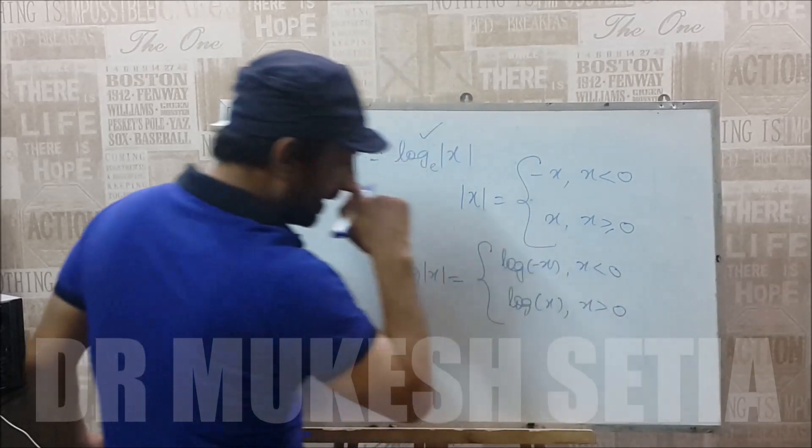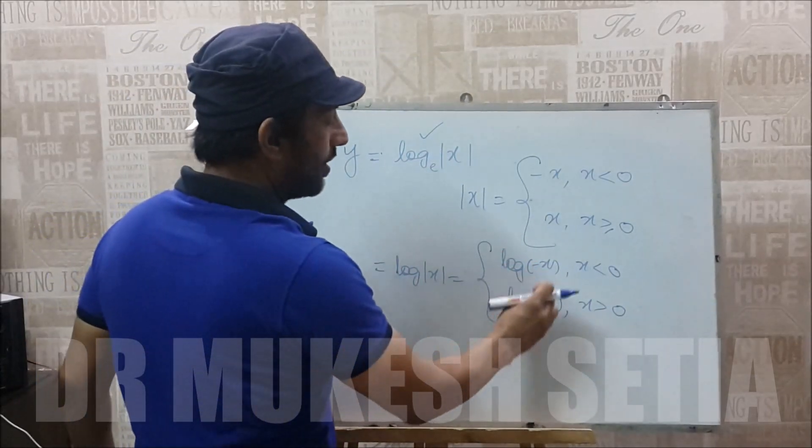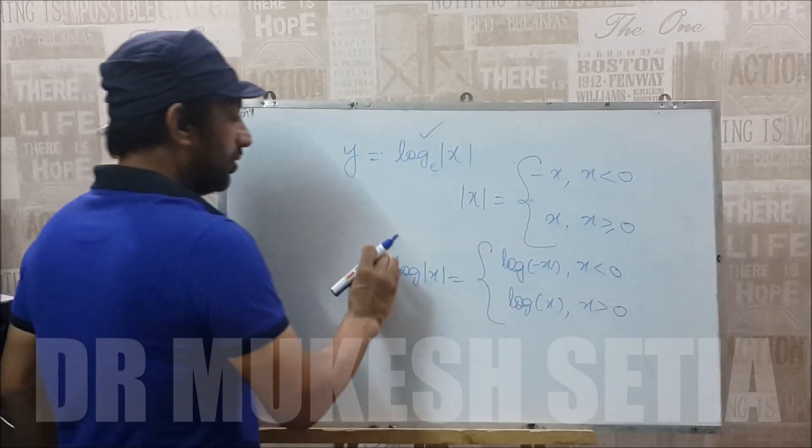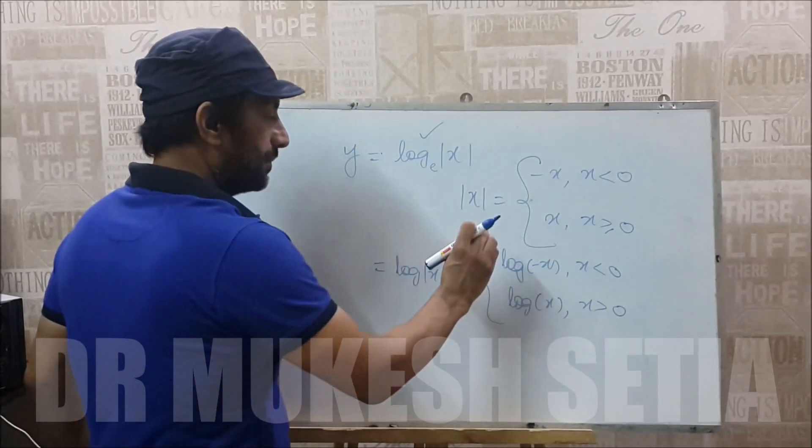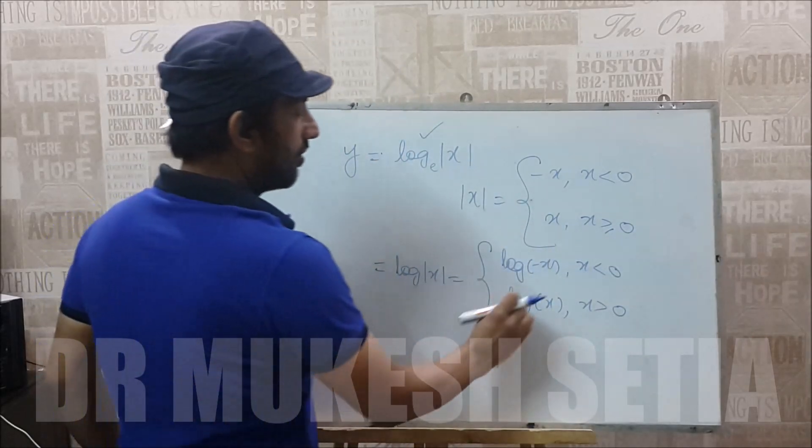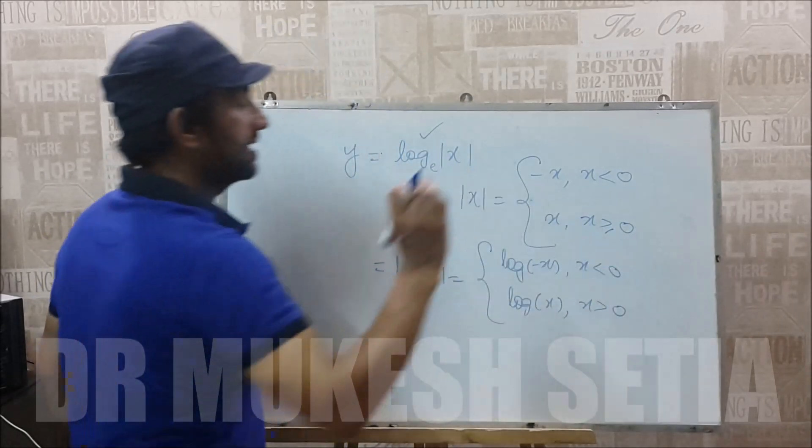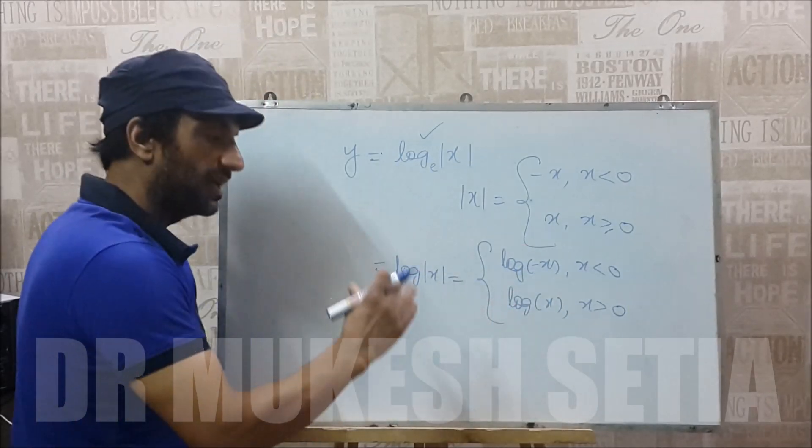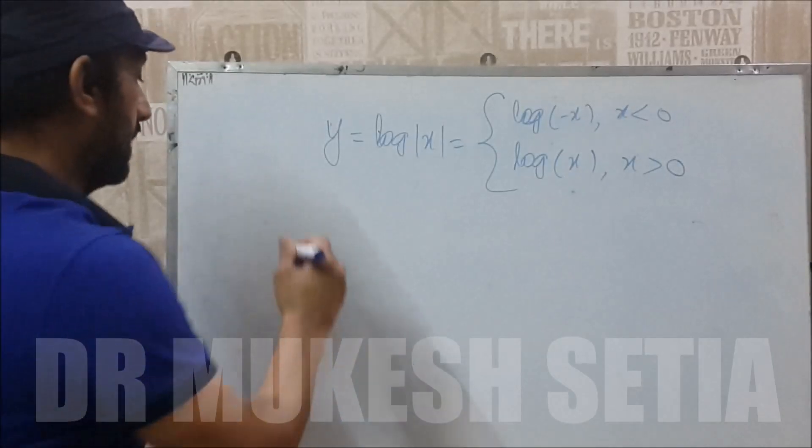Why are we not including 0? Because 0 is not in the domain of log. So log mod x is log of minus x when x is less than 0 and log of x when x is greater than 0. And now we will find its derivative.